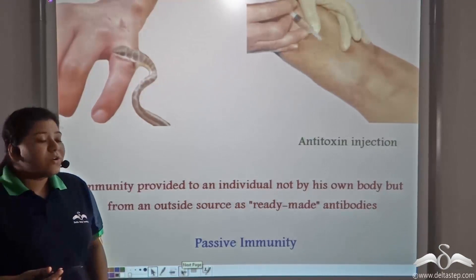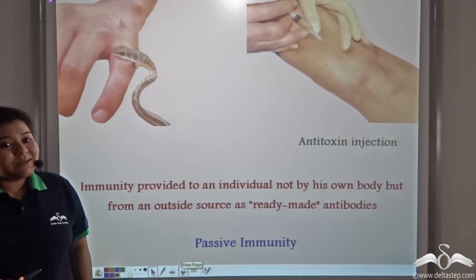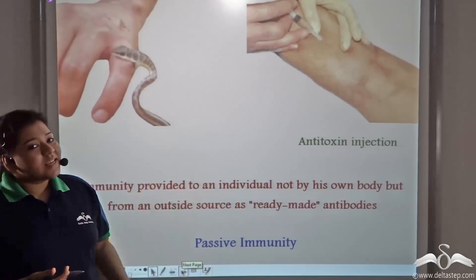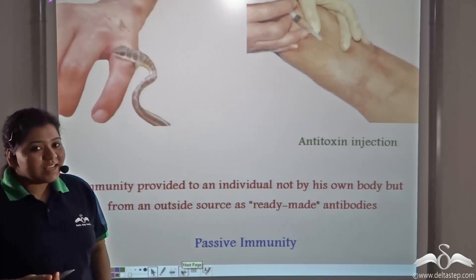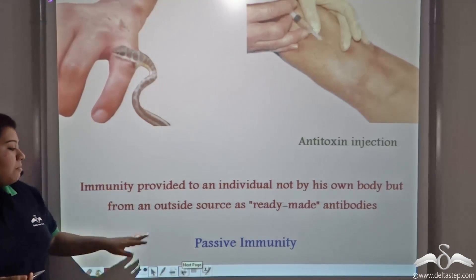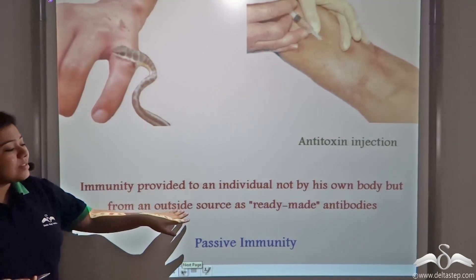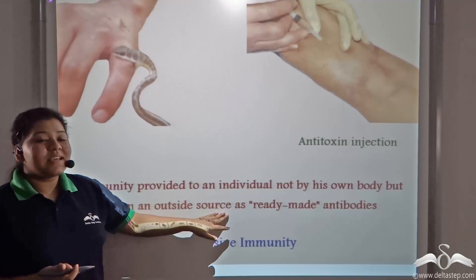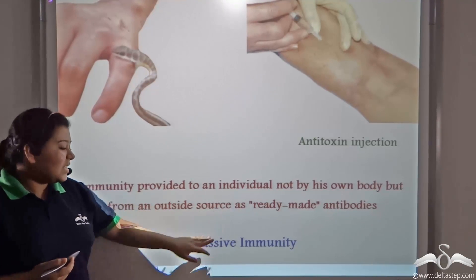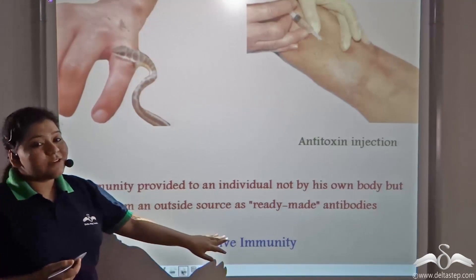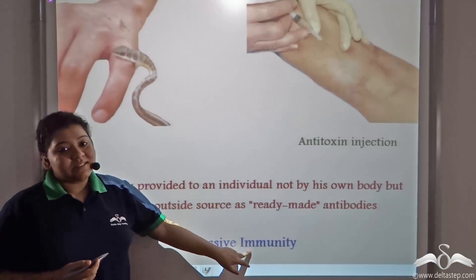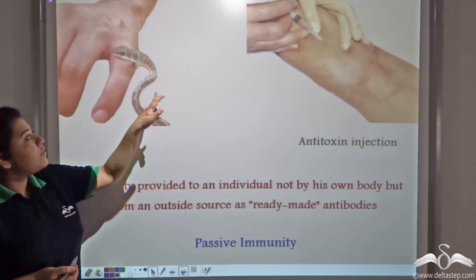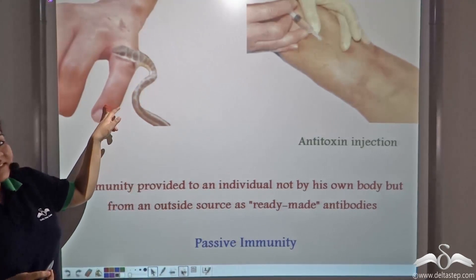Immunity provided to an individual not by his own body but from an outside source, such as ready-made antibodies, is known as passive immunity. This happens in the case of a snake bite.